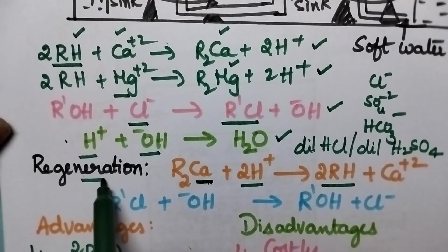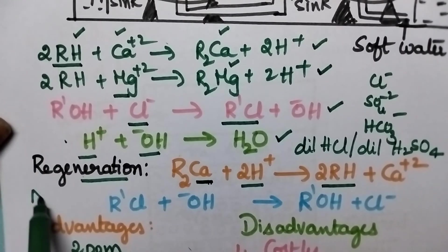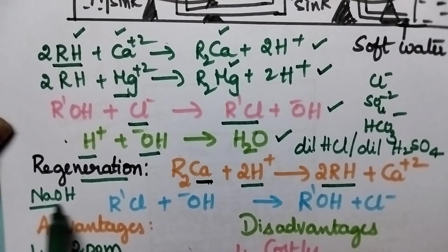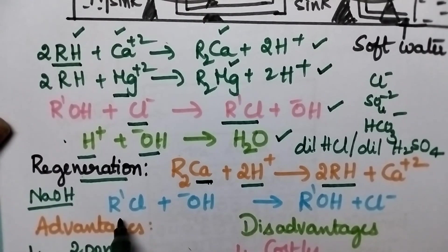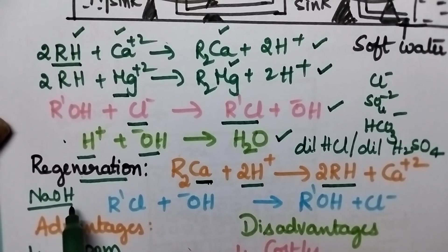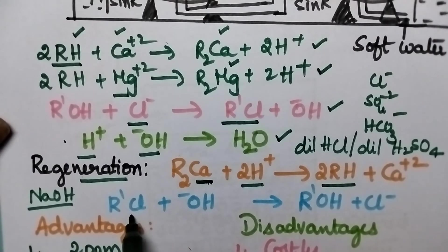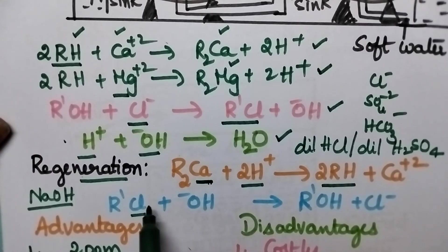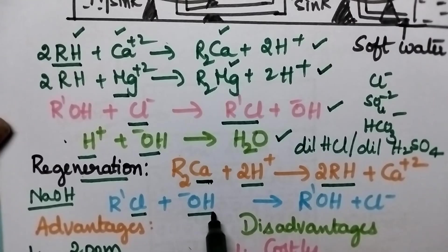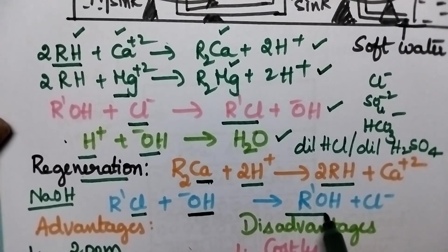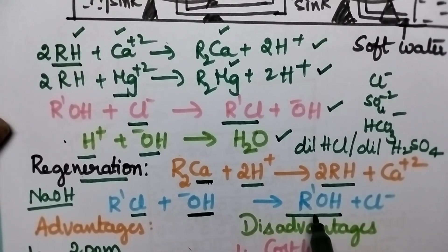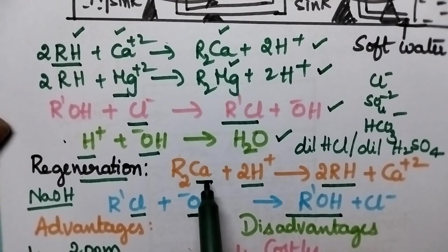Similarly, the anion exchange resin can be regenerated by washing with NaOH solution. When the exhausted anion exchange bed is washed with NaOH solution, the Cl-, sulfate, or bicarbonate ions present in the resin are replaced by OH- ions, thus again forming the anion exchange bed. In this way, both cation and anion exchange resins can be regenerated.